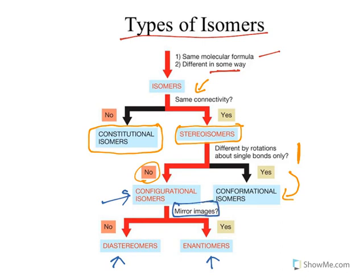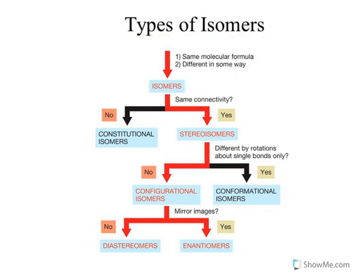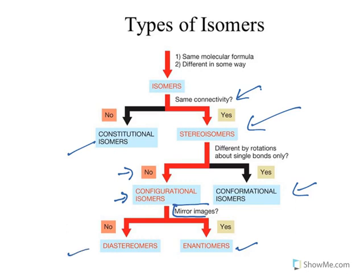Configurational isomers which are mirror images are known as enantiomers, whereas configurational isomers which are not mirror images are diastereomers. This is how you need to understand isomers. In the flowchart: same connectivity means stereoisomers; differing connectivity means constitutional isomers. In stereoisomers, if rotation gives the same compound then it is conformational; if not, it is configurational. In configurational, if the isomers are mirror images they are enantiomers; if they are not mirror images, they are diastereomers.